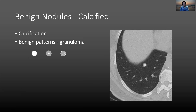For calcified nodules, there are several benign patterns of calcification. If the nodule is entirely calcified, it should be benign. You can also have central calcification, where the calcification is directly in the center of the nodule. And there's the so-called lamellated pattern, with concentric rings of calcification — also a benign pattern. I should note this doesn't always apply if you have a patient with a known malignancy that produces calcifying nodules, as those can be completely calcified and still be metastatic.